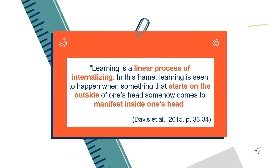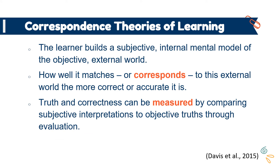Learning, then, is the process of acquiring this knowledge. Davis talks about how learning here is a linear process of internalizing — something that starts on the outside of someone's head somehow comes to be manifest inside one's head. This is known as correspondence theories of learning. With correspondence theories, the learner is building a subjective internal mental model of the objective external world, and how well this matches or corresponds to that outward world determines how correct or accurate it is.